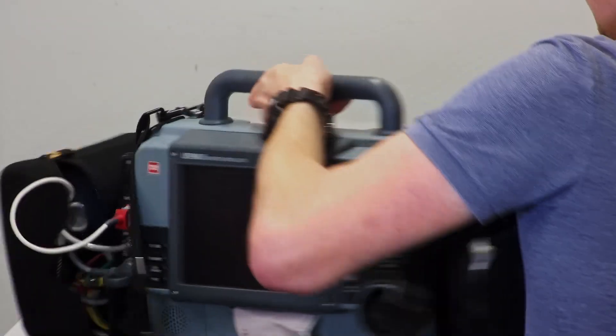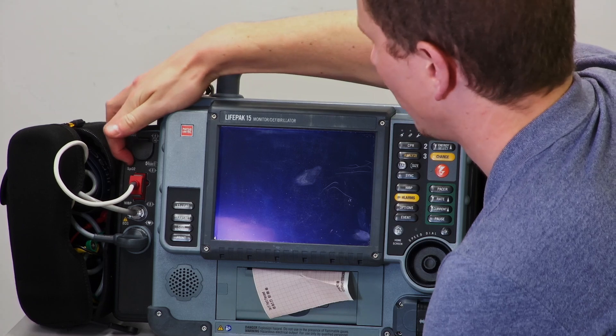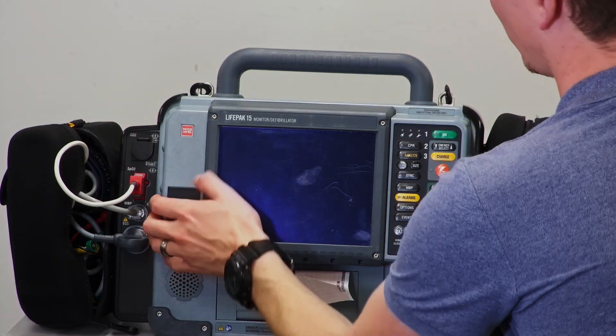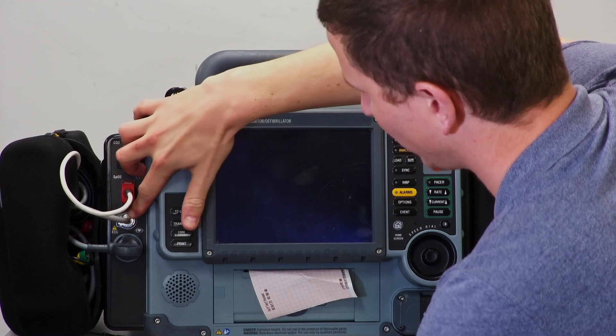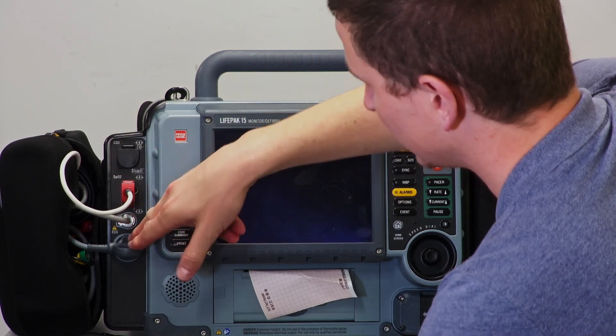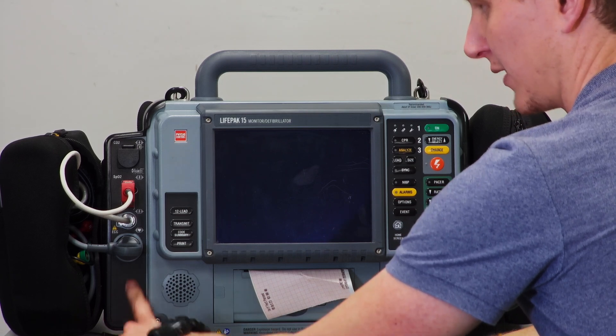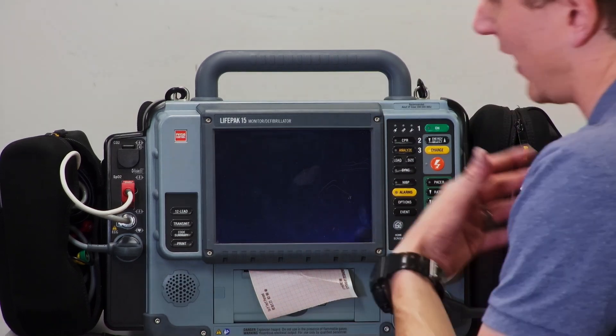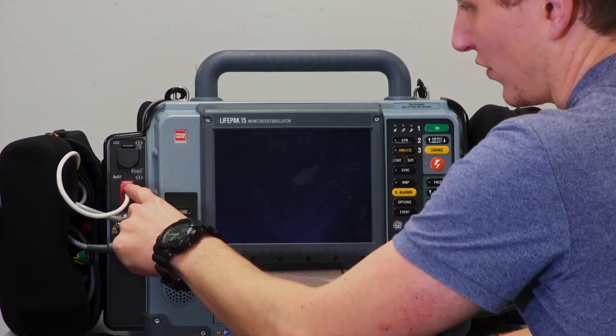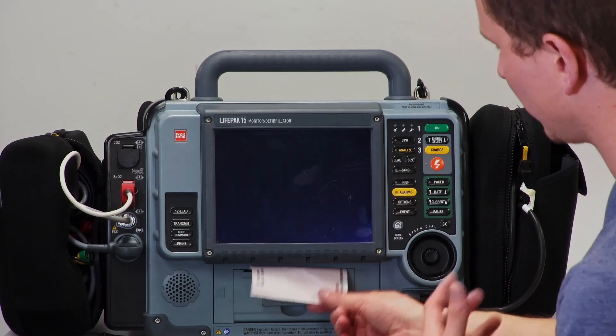On the side here, at the top you have your ETCO2 or capnography port, then your SATs probe, your BP cuff for your NIBP or non-invasive blood pressure, your ECG leads, and some monitors have invasive blood pressure monitoring at the bottom depending on the model and what modules you have. Some don't have capnography or the SATs probe—they just have ECG—and some have more, so it depends on what you have.